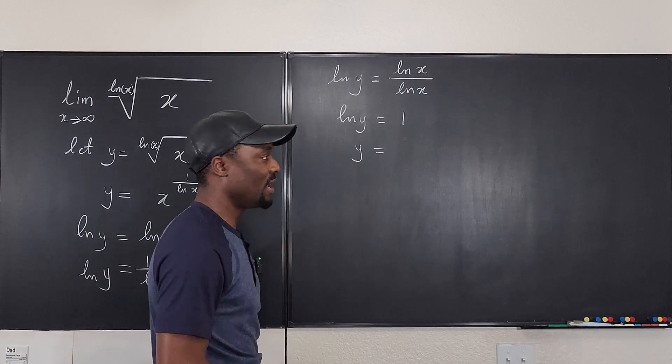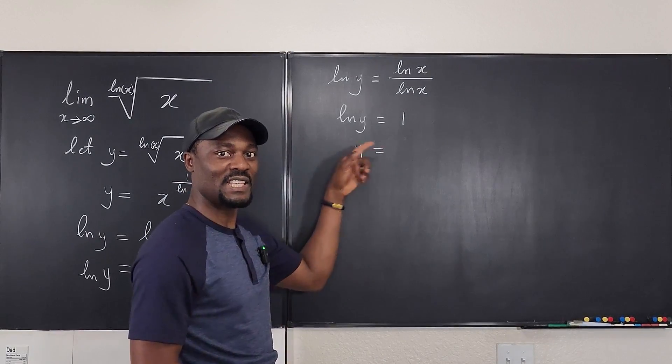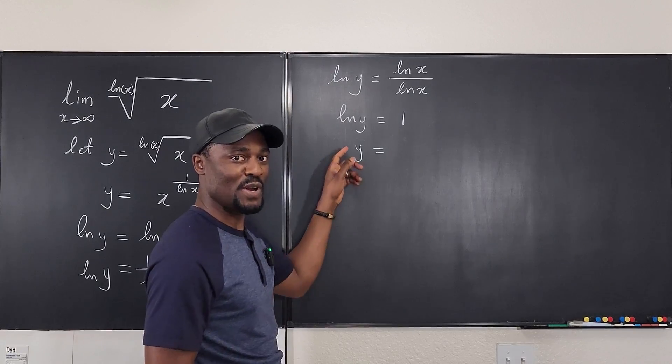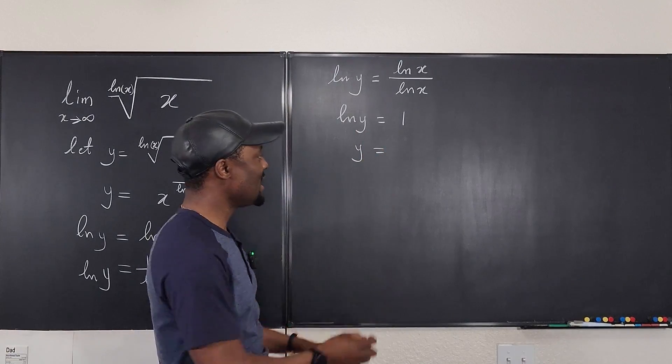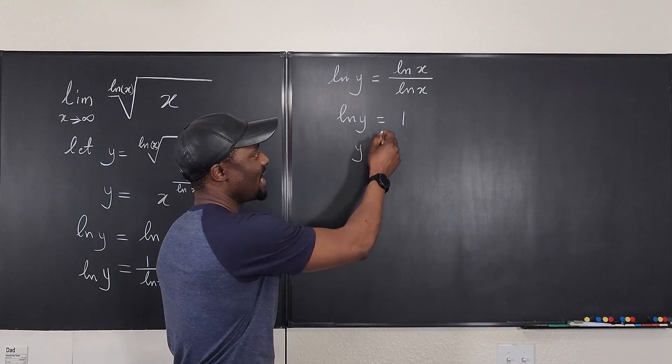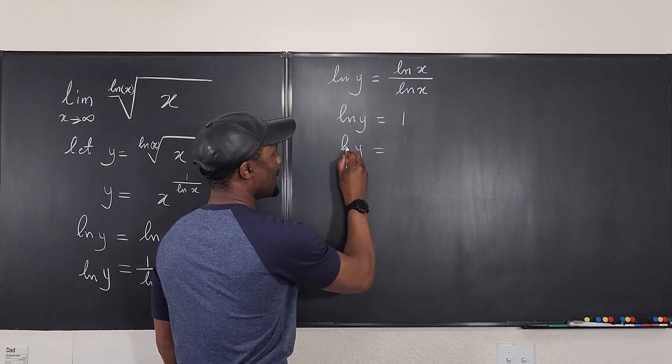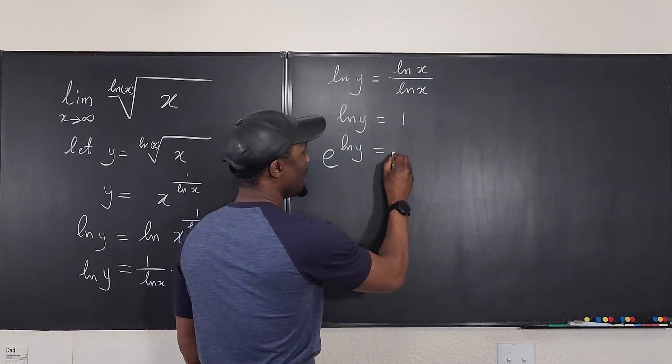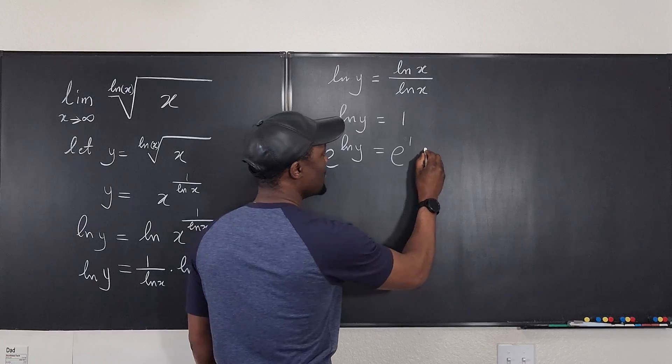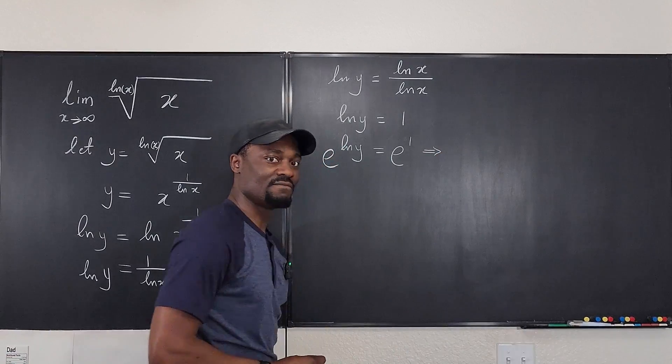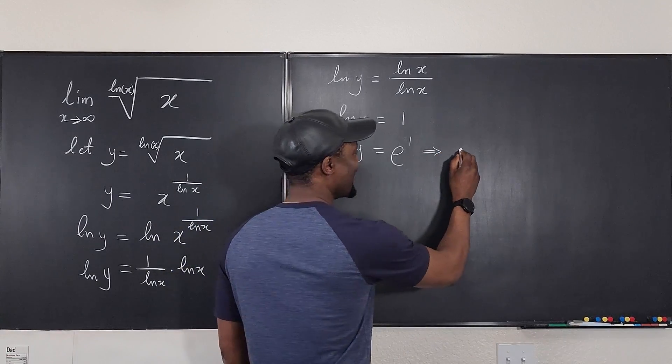What is y? Well, if you want to get rid of natural log, you take e of both sides. Remember, you raise, make both the exponents for e. So you have e to the ln(y) equals e to the 1. Well, let's do it. e to the ln(y) is e to the 1, which implies, what do we get? It means that y is equal to e.